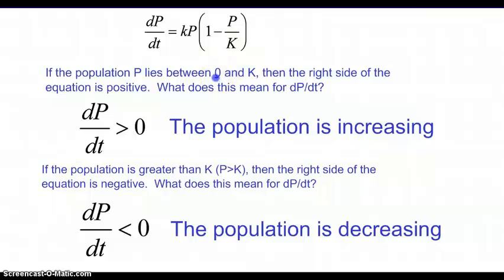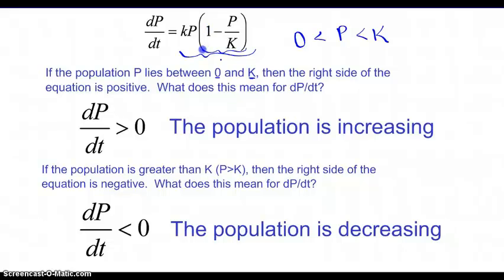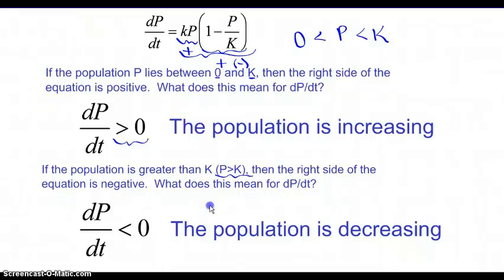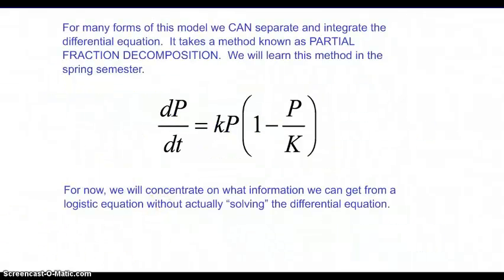If the population lies between zero and K, then the right side of the equation will be positive, since p less than K makes the limiting factor positive — so the population will be increasing. If the population is greater than the carrying capacity, then p over K is greater than one, so one minus that value is negative, and a negative times a positive gives a negative rate of change — meaning the population is decreasing. That's why we call it the limiting factor.